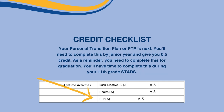Your Personal Transition Plan, or PTP, is next. You'll need to complete this by Junior year and it gives you half a credit. As a reminder, you need to complete this for graduation. You'll have time to complete this during your 11th grade STARS.